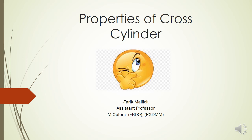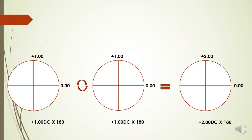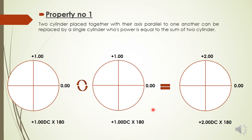Let's start with the first property. Here you can see there are two cross cylinders. Whenever two cross cylinders are placed with their axes parallel to one another, they can be replaced by a single cylinder whose power equals the sum of the two cylinders. For example, there is one cylinder which is plus 1 at 180 and another cylinder which is also plus 1 at 180.